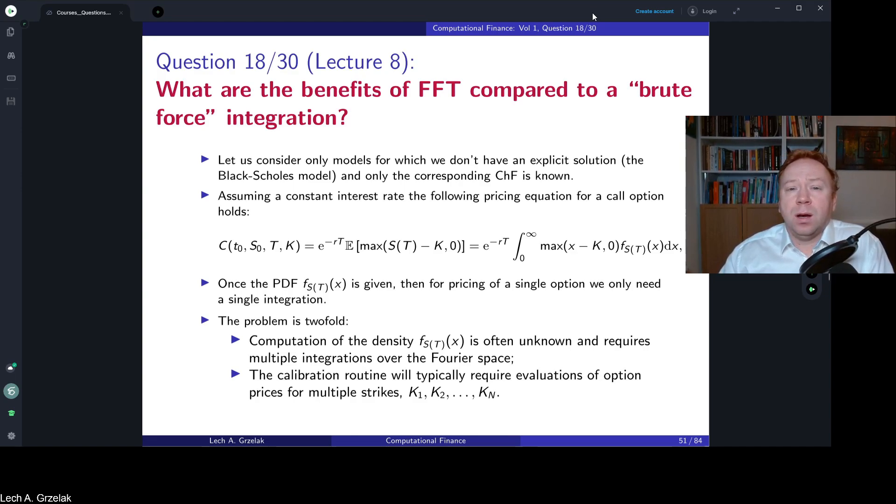In practice we experience cases where models, even if they are fine, are not flexible enough to calibrate to market data. However, in this particular question we ask: do we actually need to calculate those option prices? As mentioned, we only calculate using Fast Fourier transformation if we don't have an explicit solution. This is the key element: if you don't have explicit solution but you have characteristic function, then we would go for Fourier-based methods.